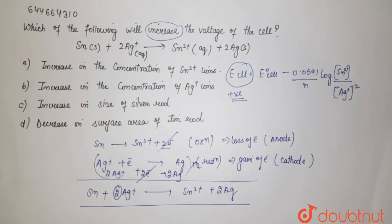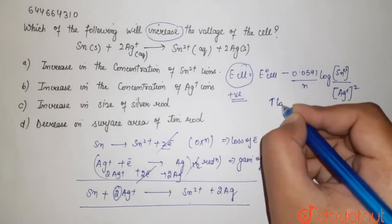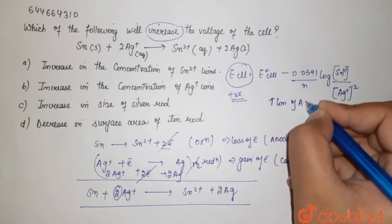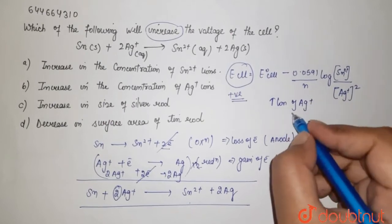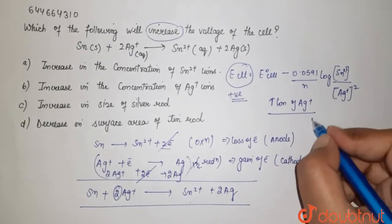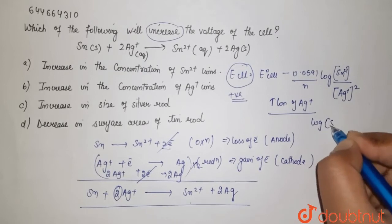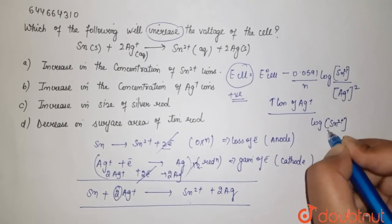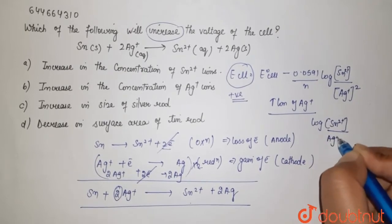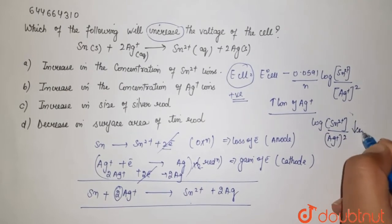So what happens if we increase the concentration of Ag plus? Then your log Sn2 plus upon Ag plus square, this whole value gets decreased.